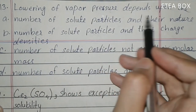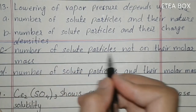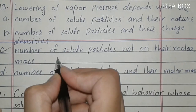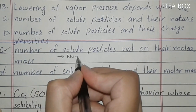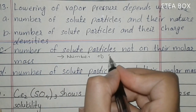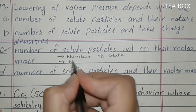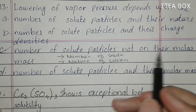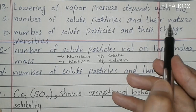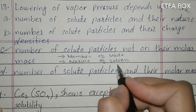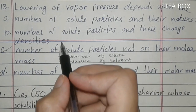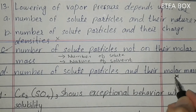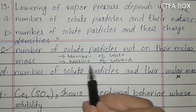MCQ 13: lowering of vapor pressure depends upon — option C is correct: number of solute particles, not their molar mass. Lowering of vapor pressure is a colligative property, and colligative properties depend on two things: number of solute particles and nature of solvent. Option A (number of solute particles and their nature) is incorrect. Option D (number of solute particles and their molar mass) is also incorrect.